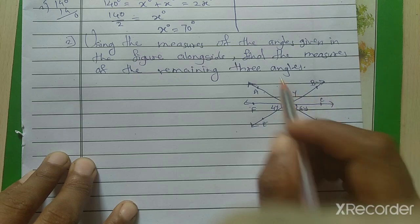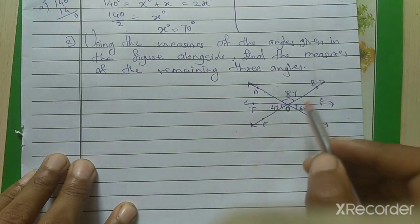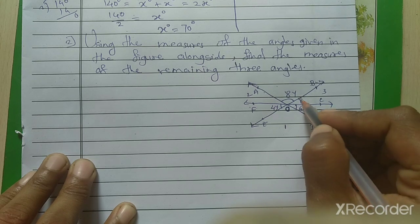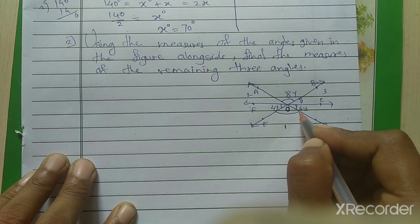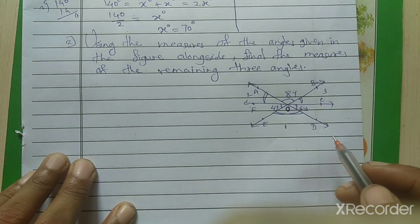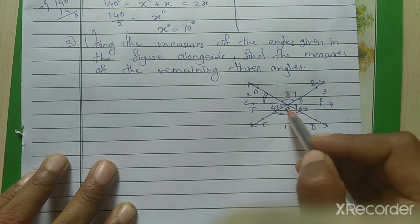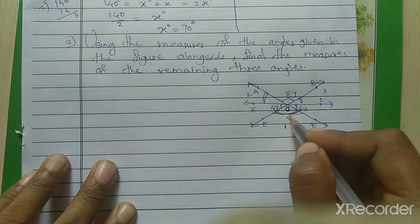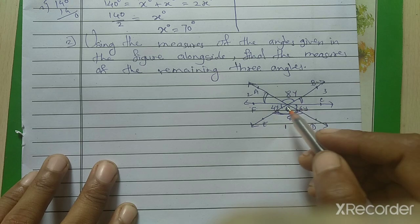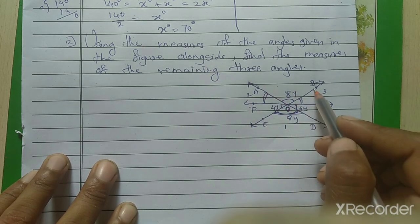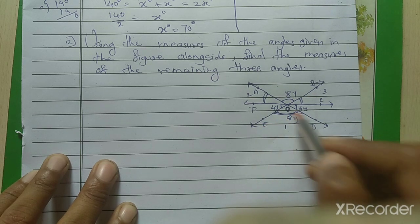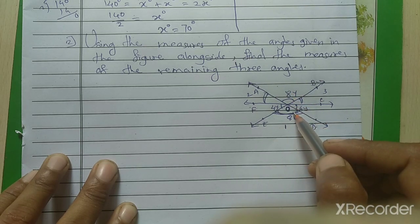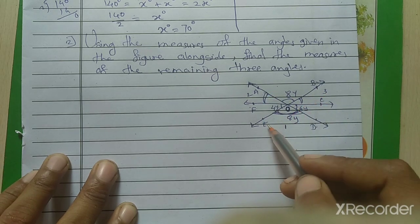Looking at the figure, angle AOB is opposite to angle EOD — they are vertically opposite angles. By the property of vertically opposite angles, their measurements are equal. Similarly, angle COB is opposite to angle FOE, so COB also equals 4Y. And angle FOA is opposite to angle COD.